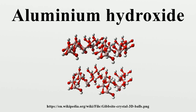Gibbsite has a typical metal hydroxide structure with hydrogen bonds. It is built up of double layers of hydroxyl groups with aluminium ions occupying two-thirds of the octahedral holes between the two layers. Aluminium hydroxide is amphoteric: it dissolves in acid, forming Al³⁺ or its hydrolysis products, and it also dissolves in strong alkali, forming Al(OH)₄⁻.